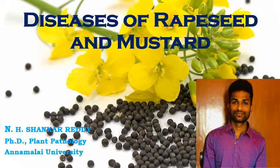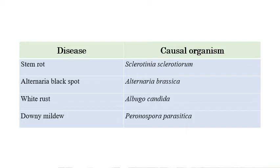Diseases of rapeseed and mustard. We will see the list of important diseases in rapeseed as well as in mustard. The scientific names are Brassica napus and Brassica campestris. My name is N.H. Shankar Reddy and I am doing a PhD in plant pathology at Annamalai University. These are the list of important diseases in rapeseed and mustard.